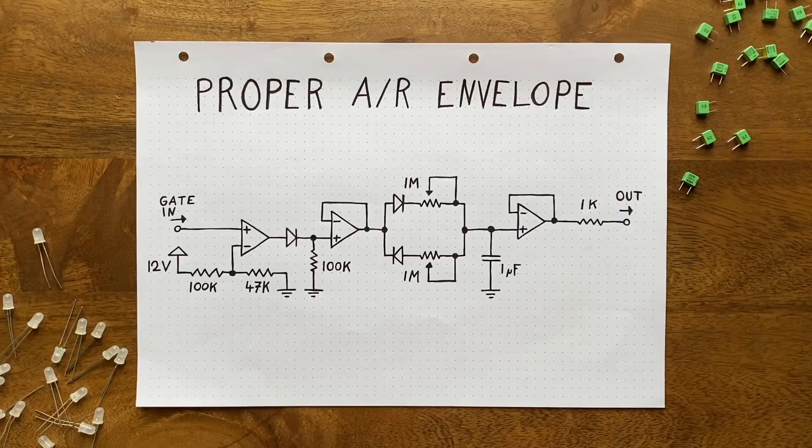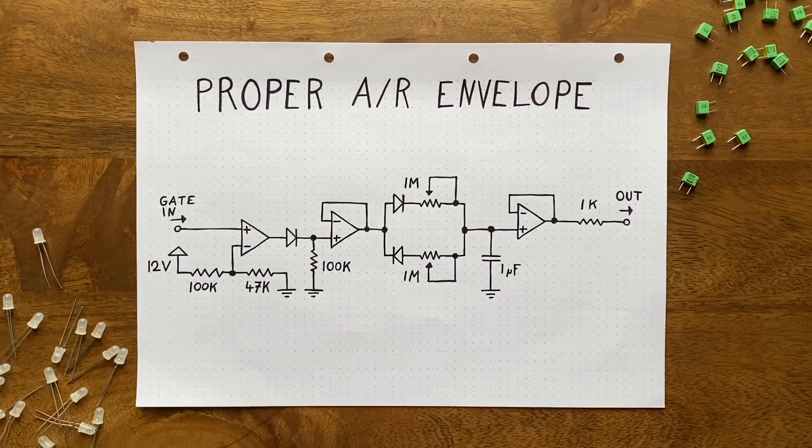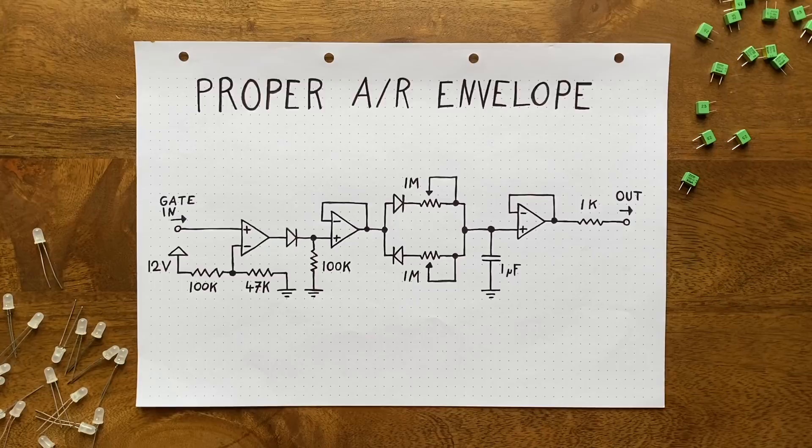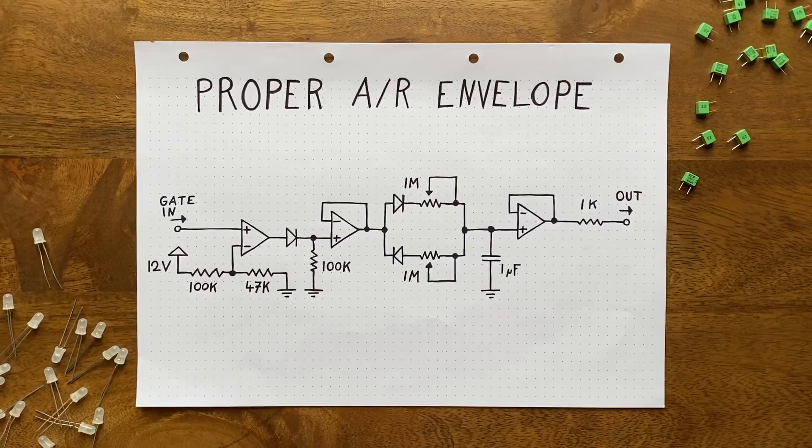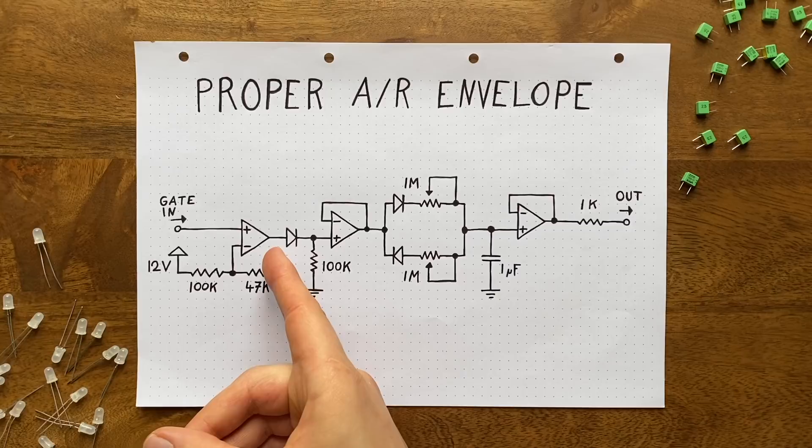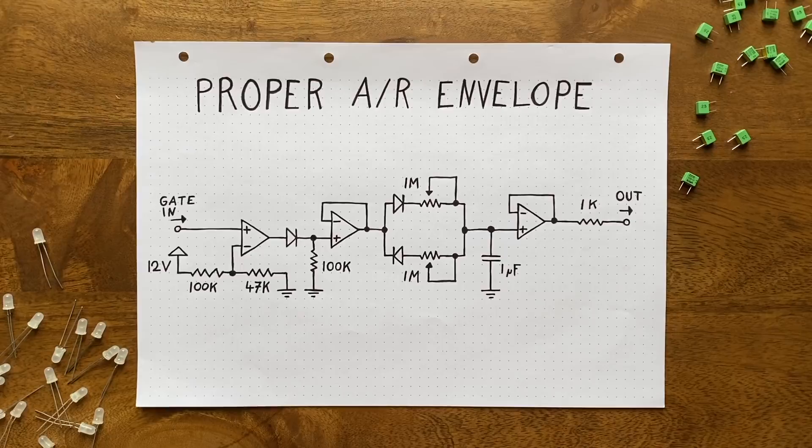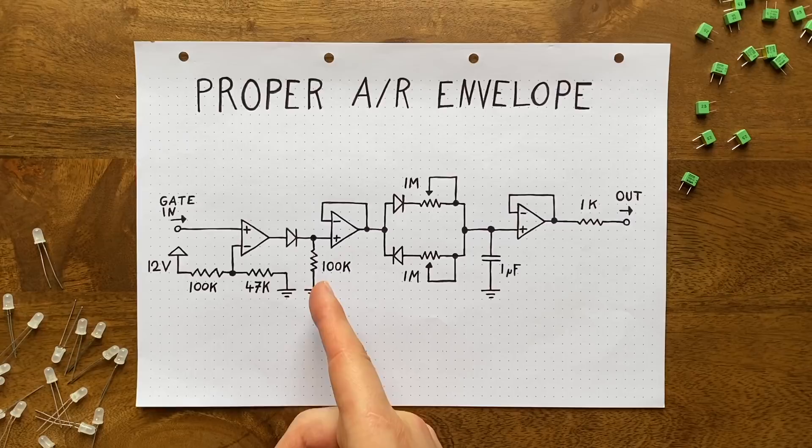It's low enough that any sequencer should be able to trigger the envelope, but definitely high enough to prevent it from firing randomly because of electromagnetic interference. Okay, so now our envelope will always get the same 12 volts to work with as long as our input signal passes the threshold. But what about the comparator's low state? We said that once the input drops below the threshold, we get minus 12 volts at this point. This is not ideal, because traditionally the baseline for an envelope's output is supposed to be 0 volts.